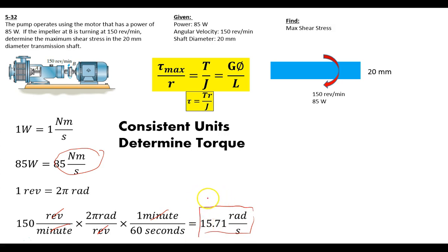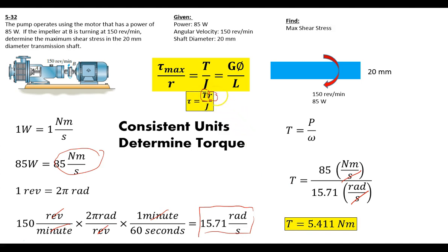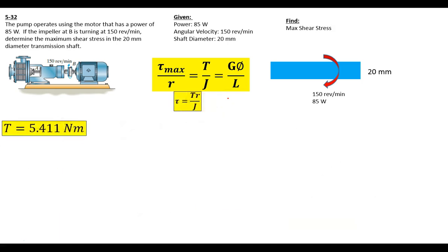Now we can get the torque, which is just the power over the angular velocity. Since those are in the units we want, 85 newton meters per second over 15.71 radians per second. We end up with 5.411 newton meters of torque that we're applying to this system. So right now we have this and we have this. Now we need to find our polar moment of inertia. We put our torque over here on the side. We're going to be using that later.